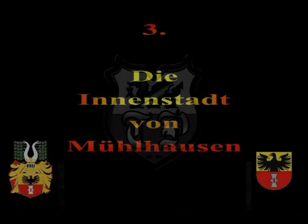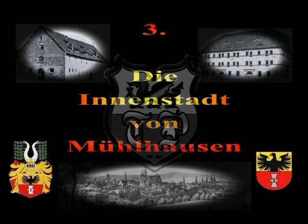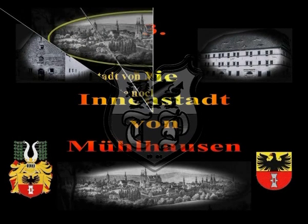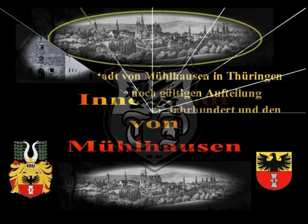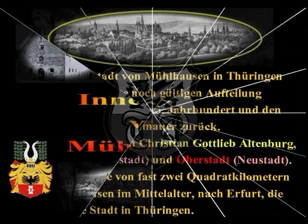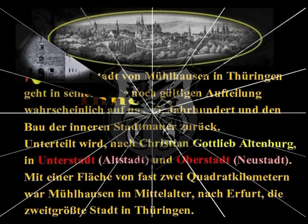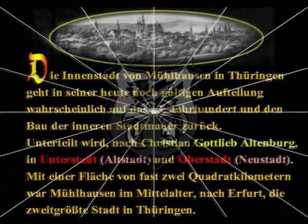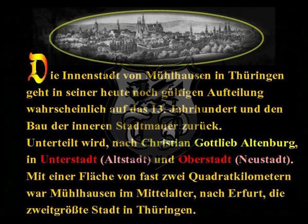Im dritten Teil der Reihe Meim-Mühlhausen geht es um die Innenstadt, deren Fläche von der inneren Stadtmauer umschlossen ist. Die Innenstadt von Mühlhausen in Thüringen geht in seiner heute noch gültigen Aufteilung wahrscheinlich auf das 13. Jahrhundert und den Bau der inneren Stadtmauer zurück. Unterteilt wird nach dem Stadtchronisten Christian Gottlieb Altenburg in Unterstadt (die sogenannte Altstadt) und in Oberstadt (die Neustadt). Mit einer Fläche von fast zwei Quadratkilometern war Mühlhausen im Mittelalter nach Erfurt die zweitgrößte Stadt in Thüringen.